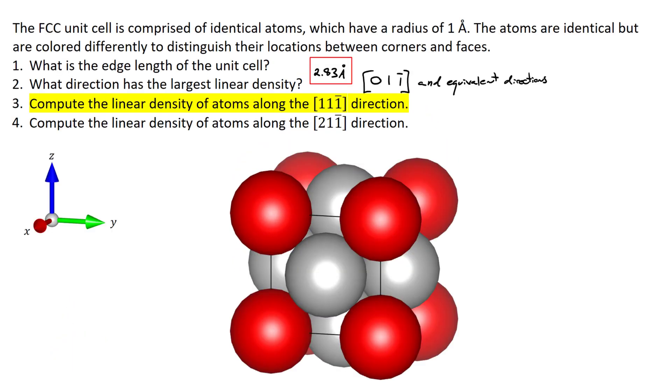The third question asks us to compute the linear density of atoms along the 1, 1, 1 negative direction. So we start in the upper left corner, we've got a unit of 1 in the x direction, another unit in the y direction, and a negative 1 in the z direction. So what we're looking at is a distance that spans the diagonal of the unit cell.